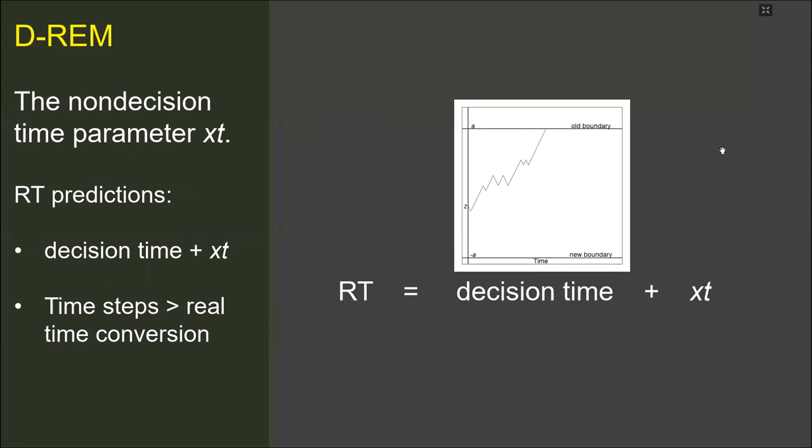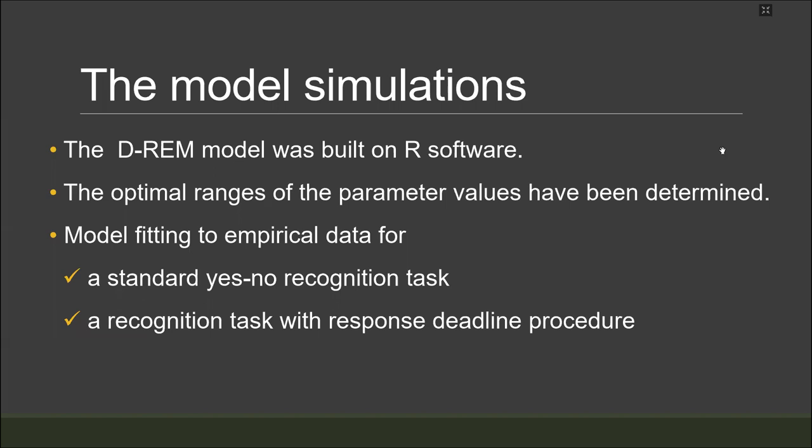Lastly, the model includes a non-decision time or extra time parameter xt. The non-decision time is added to the decision time, which gives a response time prediction for that trial. These are the basics of the D-REM model. I've been working on the model for a few months and built the model in R. After that, I have begun to discover how the model works, tried to find the optimal range of the parameter values, which result in realistic performance estimations. Once this process started to reveal satisfactory results, I began model fitting procedures to empirical data. I'd like to talk about my findings.